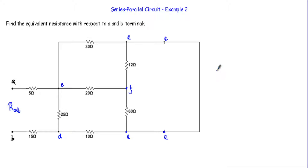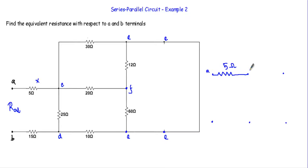To simplify this circuit, let me draw out my points: this is our point A, this is our point C, this is our point F, and in here I have points B, D, and E. If I want to go from A to C I will encounter a resistance of 5 ohm. If I want to go from B to D I will encounter a resistance of 15 ohm.